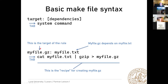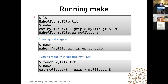An actual example: a recipe for compressing a file. The target is myfile.gz, which depends on myfile.txt on your hard drive. The recipe is: cat myfile.txt, pipe it through gzip, and output to myfile.gz. So this is the goal, this is the dependency (the input file), and the indented recipe is how you achieve it.